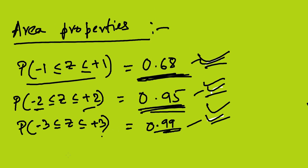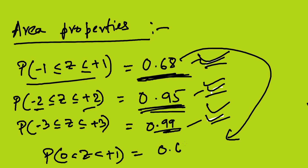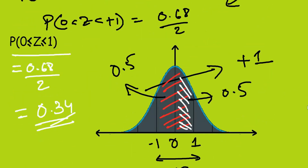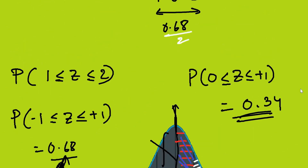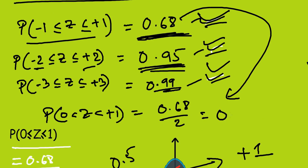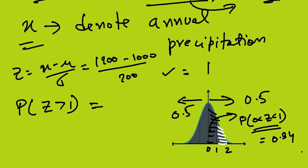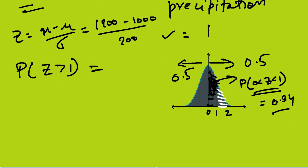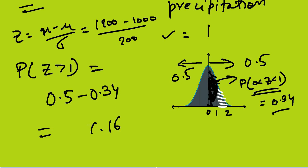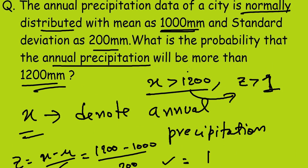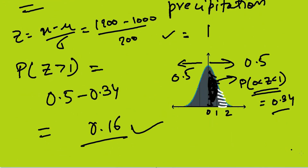Since the graph is symmetric about 0, P(0 ≤ z ≤ 1) = 0.34. Subtracting this from the right-side area: P(z > 1) = 0.5 − 0.34 = 0.16. Therefore, the probability that annual precipitation exceeds 1200 mm is 0.16.